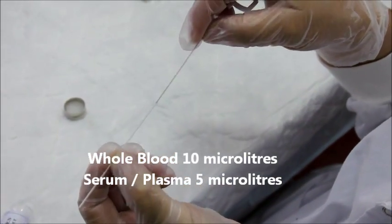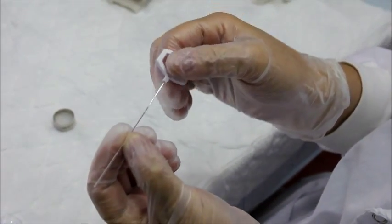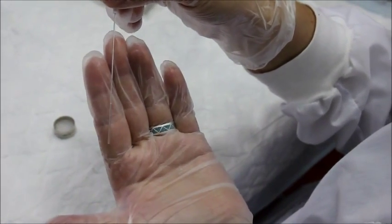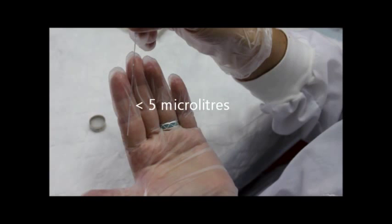If you are using the capillary tubes contained in the kit, there are two markings on the capillary tube. The lower fine line if using serum and the higher fine line if using whole blood.